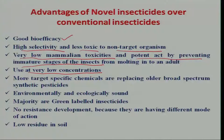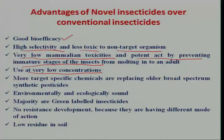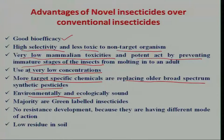To quote an example: chlorpyrifos insecticide requires almost 2000 ml to cover one acre of cotton, whereas with novel insecticides like flubendiamide, we need hardly 20 ml to cover the same one acre with higher bioefficacy. That is why they are needed at low concentrations. They are more target-specific chemicals, replacing broad-spectrum synthetic pesticides. These new molecules very specifically affect a particular insect and are environmentally and ecologically very sound. The majority are green-labeled insecticides, derived or synthesized from plant sources or microbes.